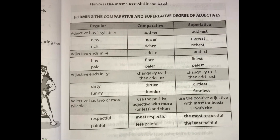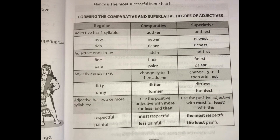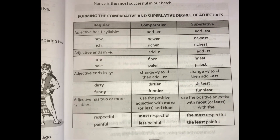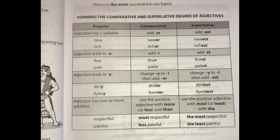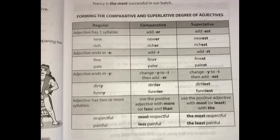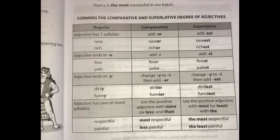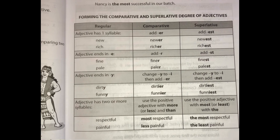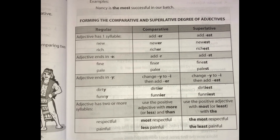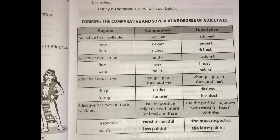Adjective has two or more syllables: use the positive adjective with 'more' or 'less' and 'than' for comparative. For superlative, use the positive adjective with 'most' or 'least' with 'the.' Example: respectful — more respectful (comparative) — the most respectful (superlative). Painful — less painful — the least painful.